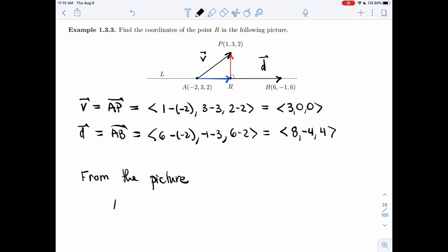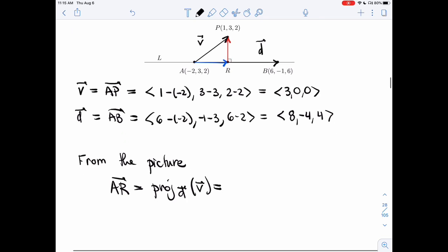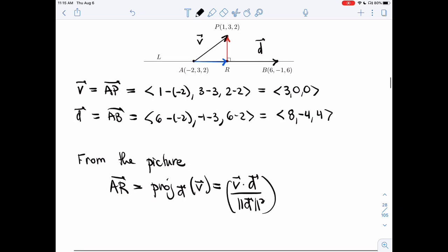We have that AR is the projection onto D of V. And so it will be V dot D over length of D squared times D. So that won't take too long. V dot D, that's just 24. It's 3 times 8.